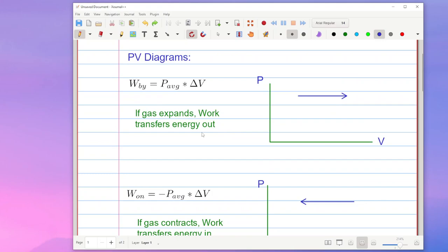Well on a PV diagram if you have a process which is moving towards the right here then that means that your delta V is a positive value or the gas is expanding. Versus if you have something moving towards the left that means the change in volume is negative. It's being compressed or it contracts.